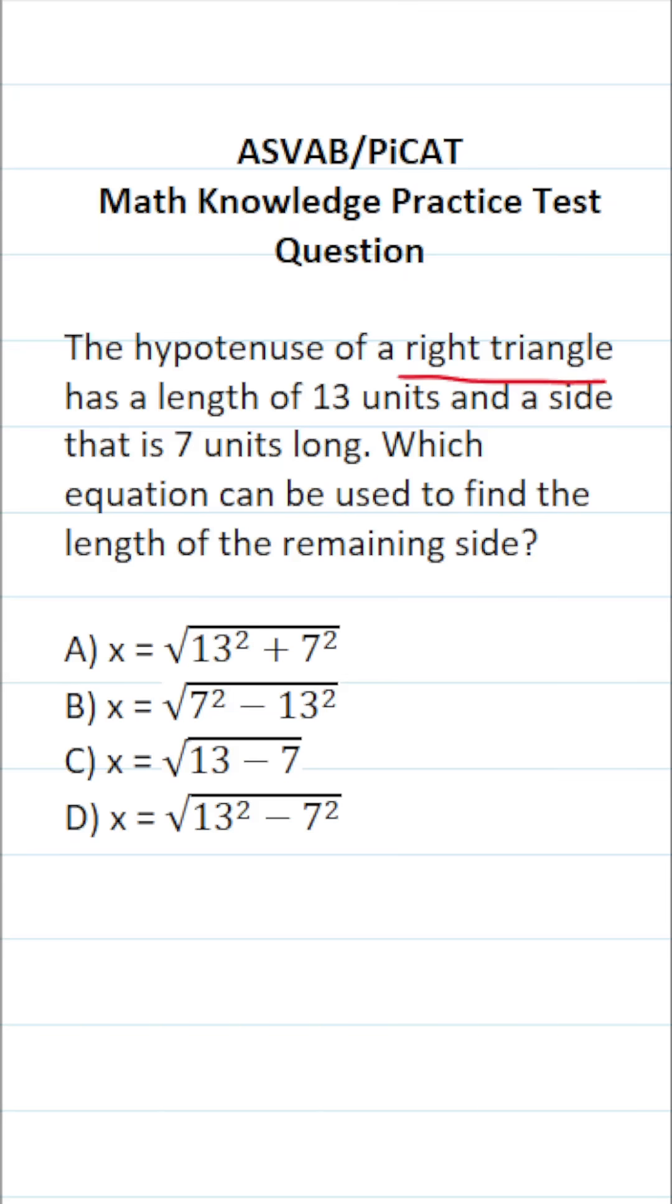The Pythagorean theorem, which is only used for right triangles, says a squared plus b squared equals c squared, where a and b are the legs of the right triangle and c is the hypotenuse of the right triangle.